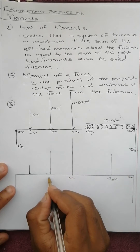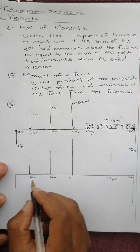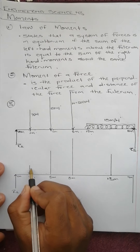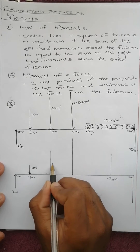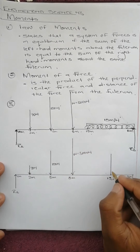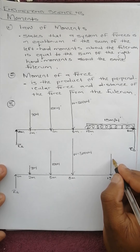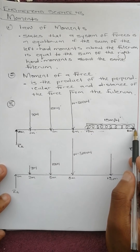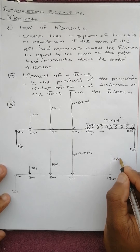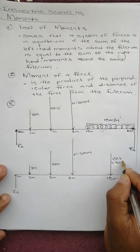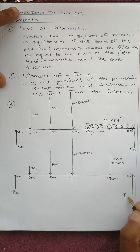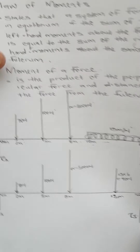We have loads at 0 meters, 2 meters, 5 meters, 8 meters, 13 meters and 16 meters. The loads are: 17 newtons, 100 newtons, W equals 3000 newtons, and the distributed load point force is 15 times 6 which equals 90 newtons.